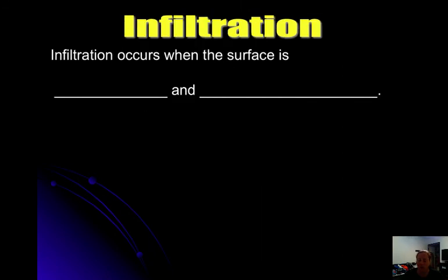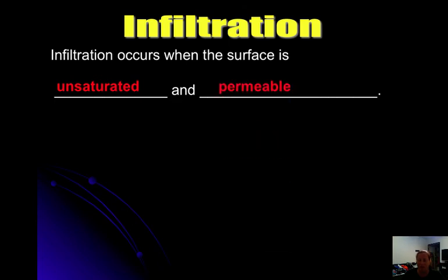Infiltration — water moving through the ground — occurs when the surface is unsaturated and permeable. Unsaturated means it's not full of water; permeable means water is able to flow through. If the soil is already saturated, water will not go through. If the material is impermeable, water cannot go through.